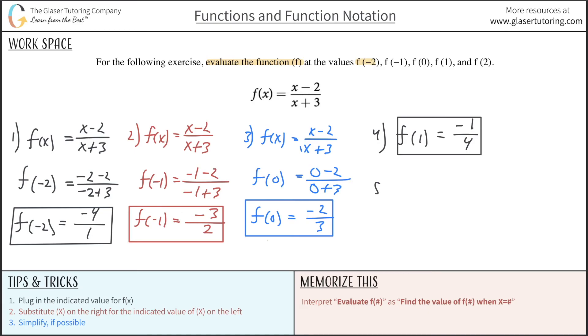Last but not least, number 5 is f(2). This should be 0 over 5, but we know 0 over anything is just 0. So that's that answer.